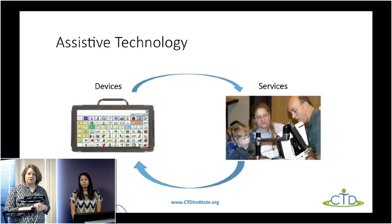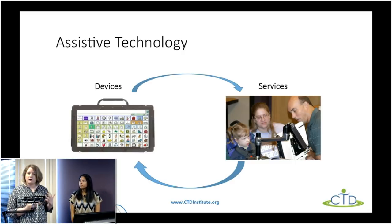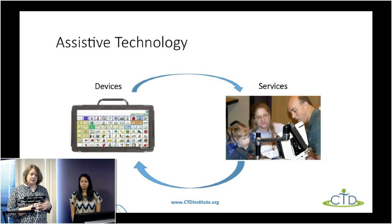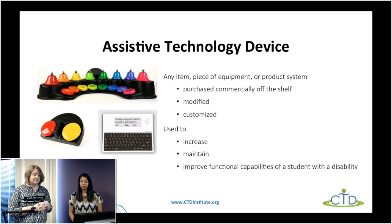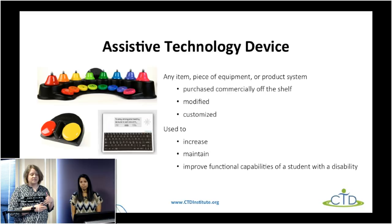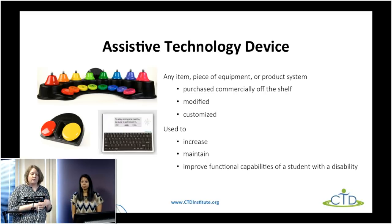When we think about assistive technology, it actually has two components: the devices and the tools — the stuff you think of when you hear the word technology — but it also has a service component. Legally, assistive technology is defined by IDEA, special education law, as any item, piece of equipment, or product that is either purchased commercially, modified, or customized to increase, maintain, or improve the functional capabilities of a student with a disability.